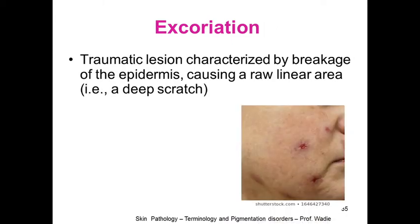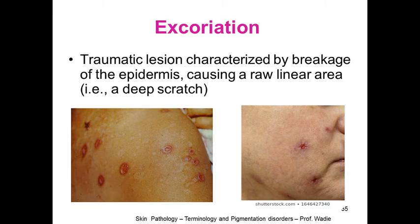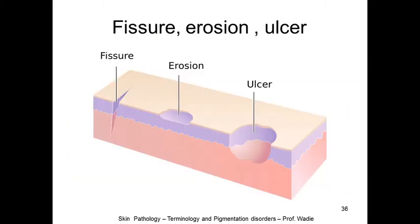Excoriation is a traumatic lesion characterized by breakage of the epidermis causing a raw linear area — that is to say a deep scratch. There is loss or breakage of the epidermis. Other related terms: fissure when there is a cut; erosion when there is superficial loss of the epidermis; and ulcer when the loss goes deeper, involving even the dermis.